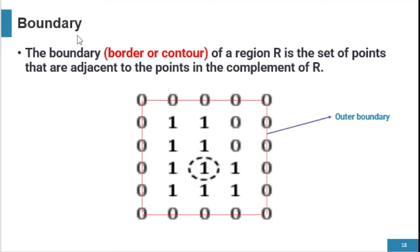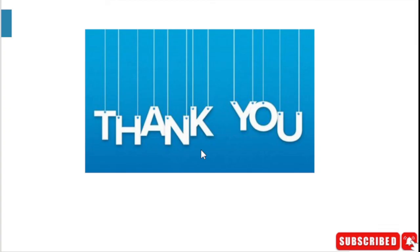Boundary is the last basic relationship between pixels. The boundary or contour of a region R is the set of points adjacent to points in the complement of R. In a pixel arrangement, zeros form the outer boundary (background) and ones form the inner boundary (foreground) around the pixel. This is the concept of boundary in basic pixel relationships. I hope this tutorial is helpful — if you have any doubts, please ask in the comment box.